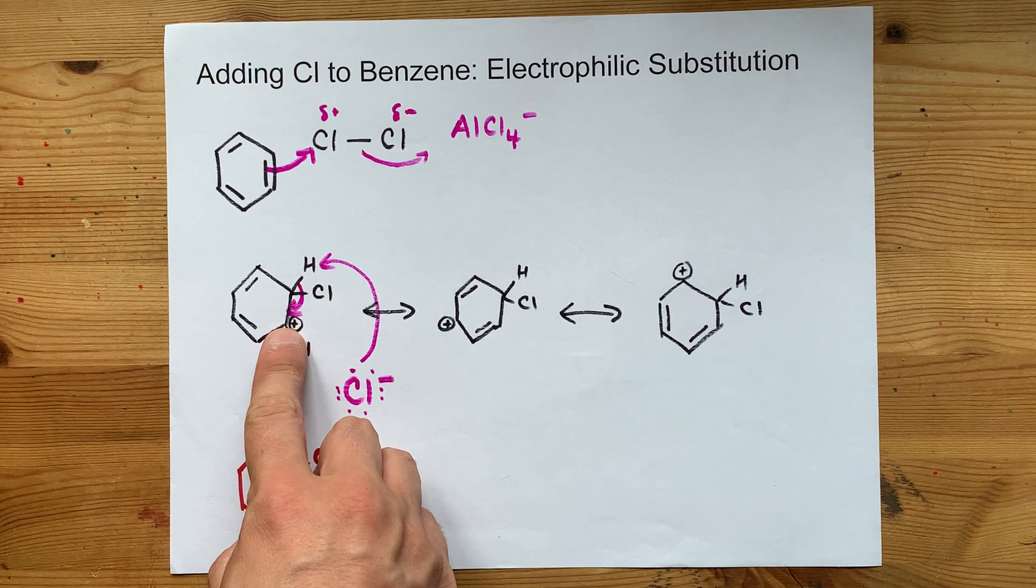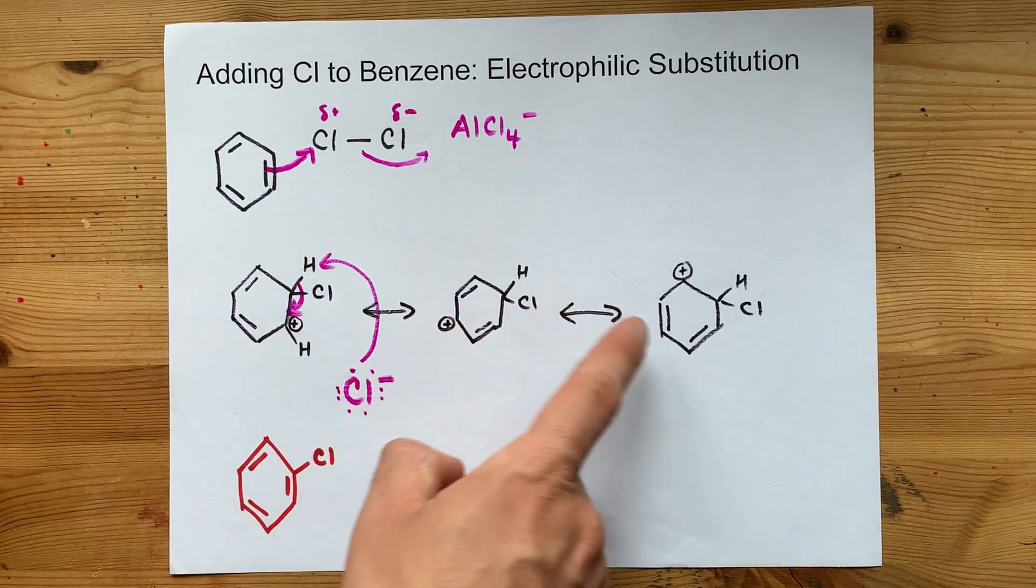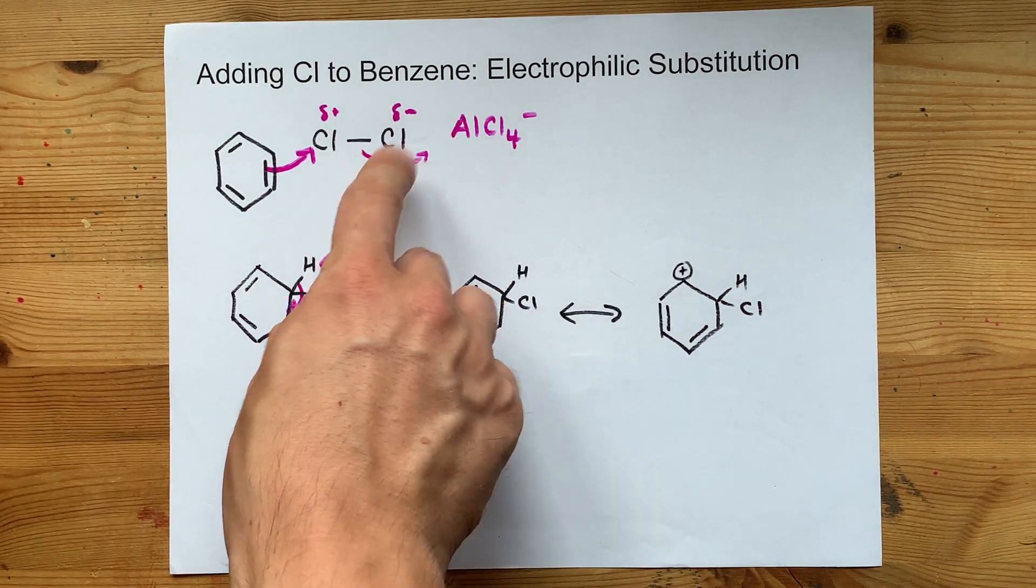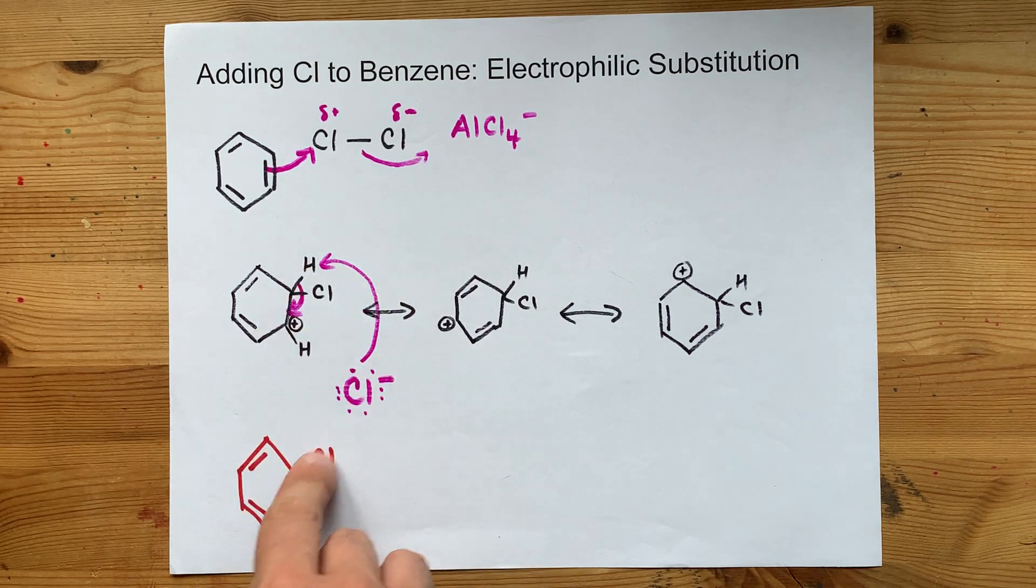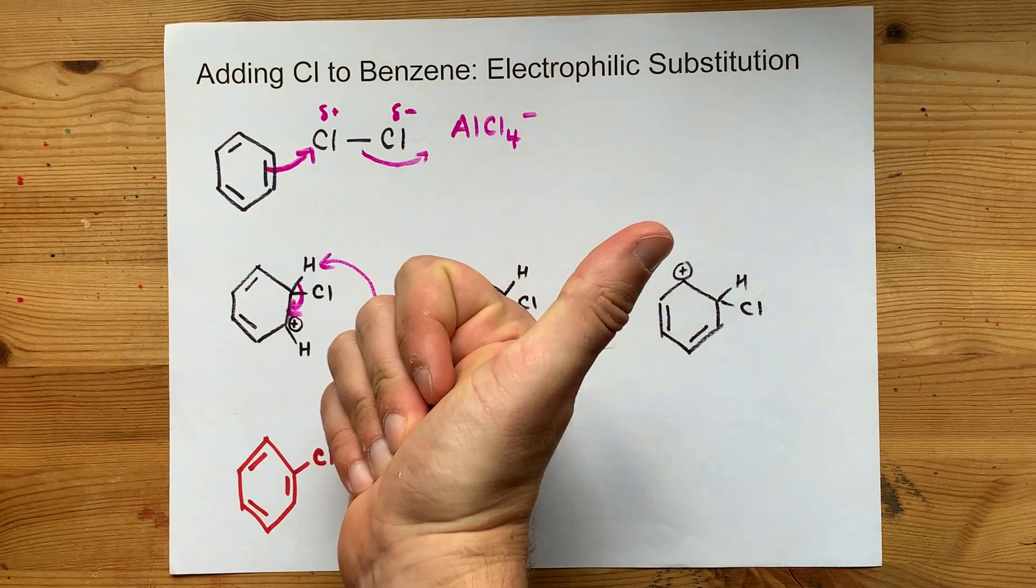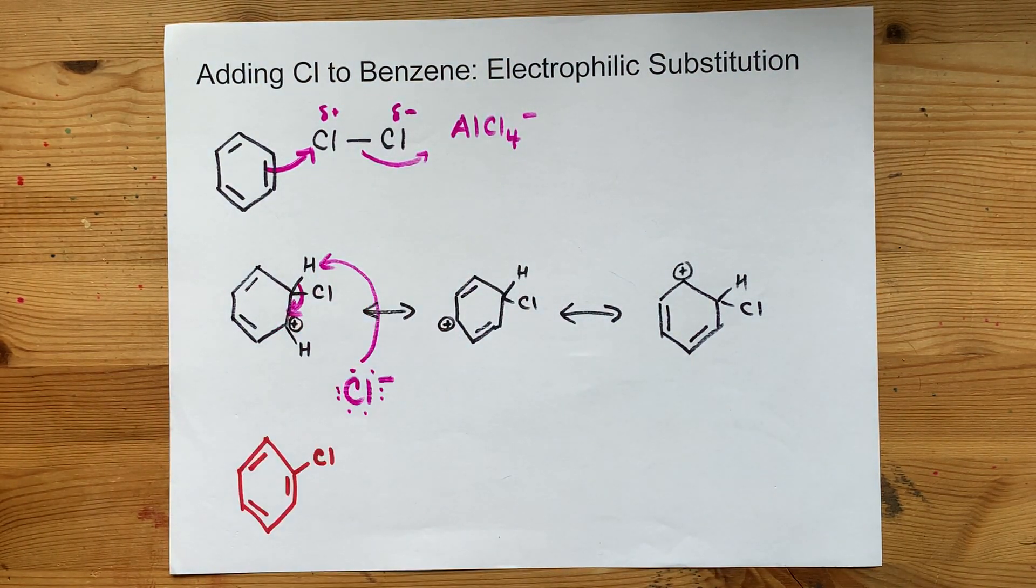leaves you with a carbocation intermediate, which is stable because you can delocalize it. And lastly, the Cl- that popped off that molecule comes back and steals away the H that the Cl substituted. All right, very nice. Thanks for being with me, and best of luck.